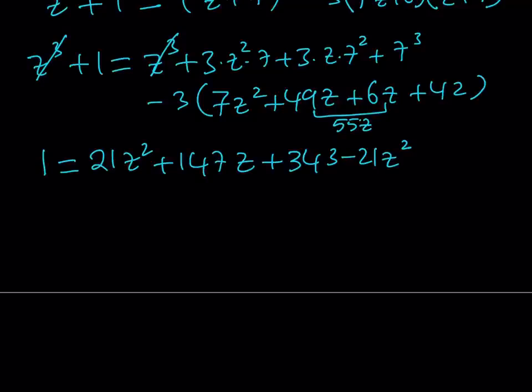And then, 3 times negative 3 times 55 is going to be minus 165z. And then, finally, 3 times 42 is going to be 126. But that's negative, so minus 126. Now, this is my expression and the z squared cancels out, which is really cool.